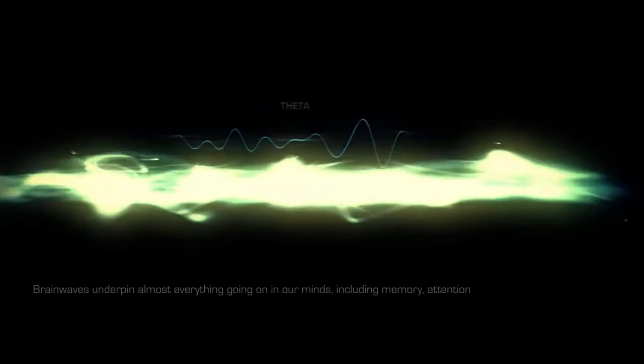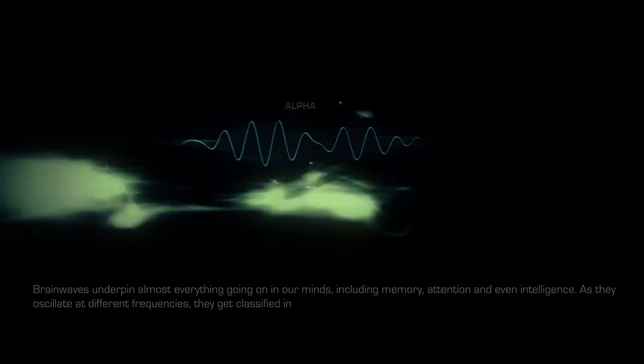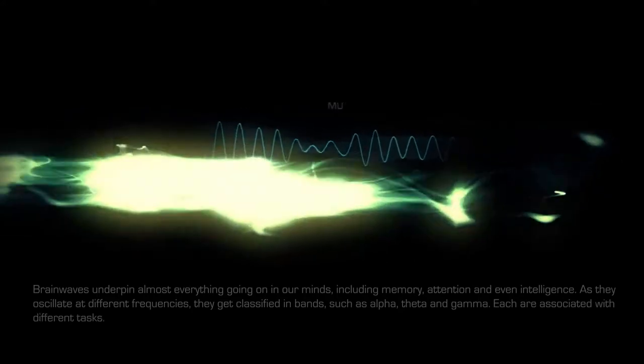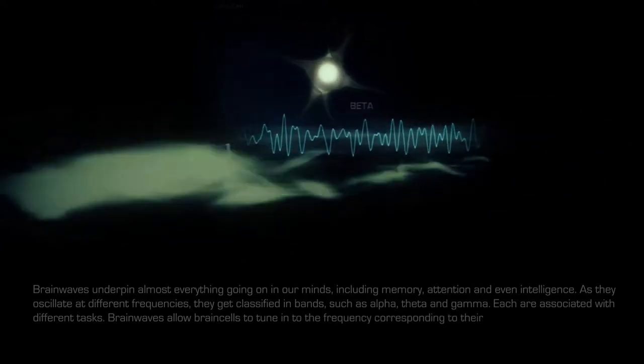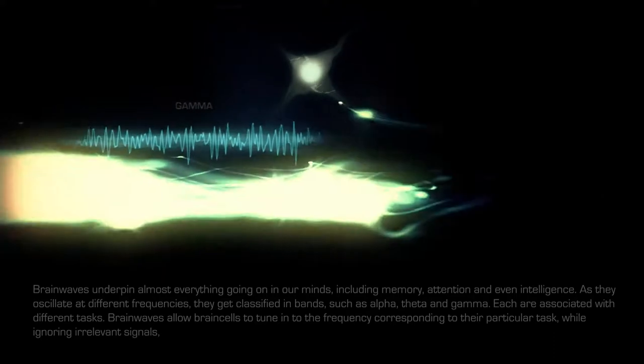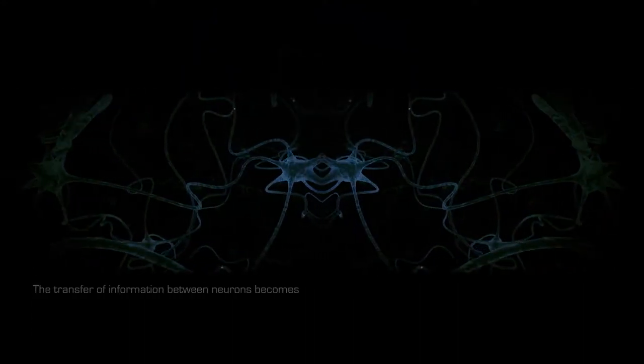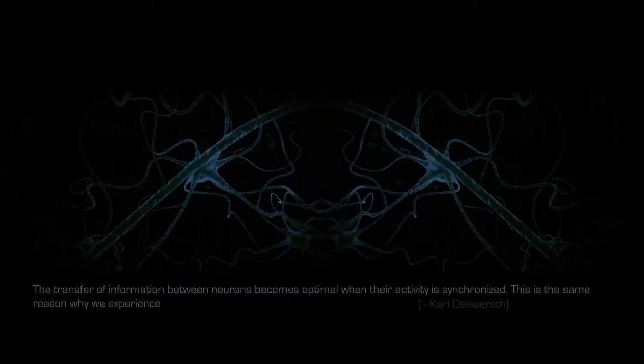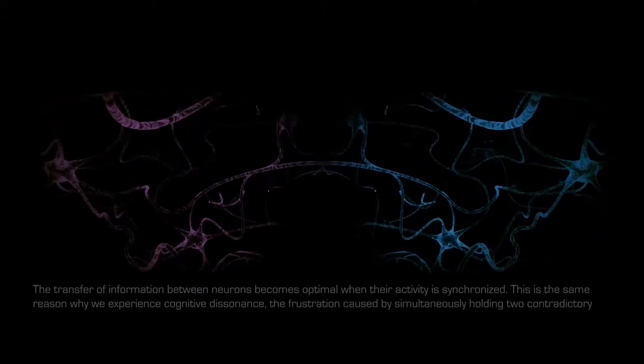As they oscillate at different frequencies, they get classified in bands such as alpha, theta, and gamma. Each are associated with different tasks. Brain waves allow brain cells to tune into the frequency corresponding to their particular task while ignoring irrelevant signals, similar to how a radio homes in on different waves to pick up radio stations. The transfer of information between neurons becomes optimal when their activity is synchronized. This is the same reason why we experience cognitive dissonance—the frustration caused by simultaneously holding two contradictory ideas.